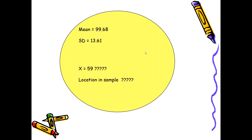Let's suppose we have taken a sample where the sample mean is 99.68 and the standard deviation is 13.61. Another observation in this sample shows the value of 59. We want to know how much this value differs from the mean in terms of standard deviation, which will be calculated using the Z-score. The Z-score will also tell us where this particular value is located in the normal distribution curve.